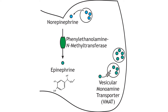Epinephrine is synthesized from norepinephrine in the cytoplasm by the enzyme phenylethanolamine N-methyltransferase. So epinephrine synthesis requires norepinephrine to exit the vesicles where it was synthesized. After synthesis in the cytoplasm, epinephrine is repackaged into vesicles via the vesicular monoamine transporter.